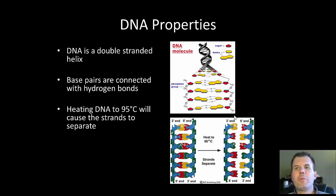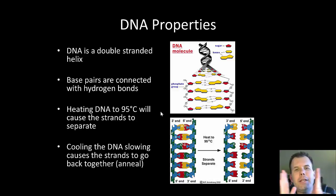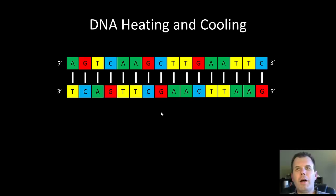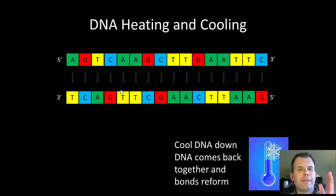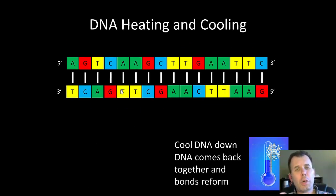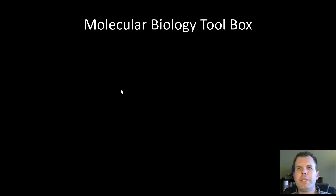If you heat the DNA to 95 degrees, the base pairs and hydrogen bonds open up. If you cool the DNA back down, it can actually come back together — it finds its complementary bases and reforms. Here's my fragmented DNA: I heat it to 95 degrees and separate it out. If I take it out of the 95-degree water and put it into a refrigerator, it will find its complementary bases and form double-stranded DNA again. We utilize this property in quite a few of the techniques today — we have to open up the DNA in order to change and manipulate it.